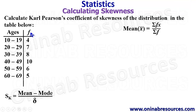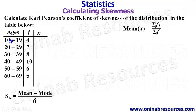From the table, we don't have x. x represents the mid value of the intervals, so we create an additional column for x. To get the values for x, we add the lower limit and the upper limit and then divide the sum by 2. 10 plus 19 divided by 2 gives 14.5. 20 plus 29 divided by 2 gives 24.5.